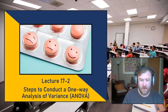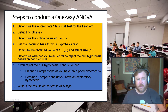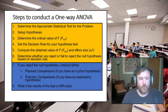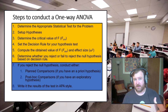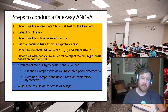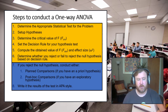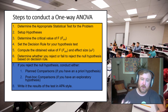On one-way ANOVA step-by-step, there are two parts. Today we're going over the portion shaded in orange, beginning with determining the appropriate statistical test and ending with whether or not we reject or fail to reject the null hypothesis. The next lecture covers the section in blue — planned comparisons, post hoc tests, and writing up results in APA style format.